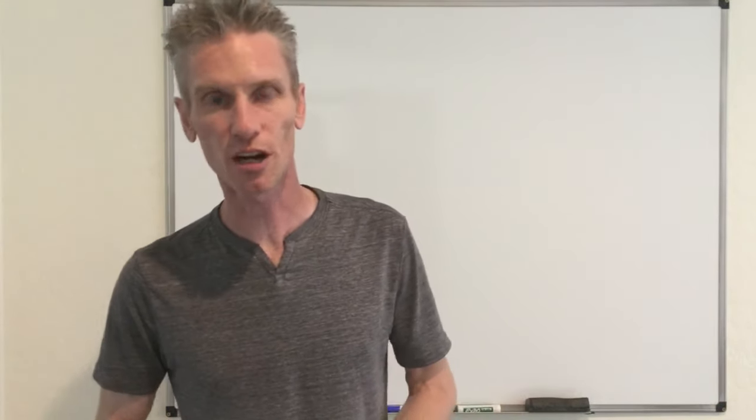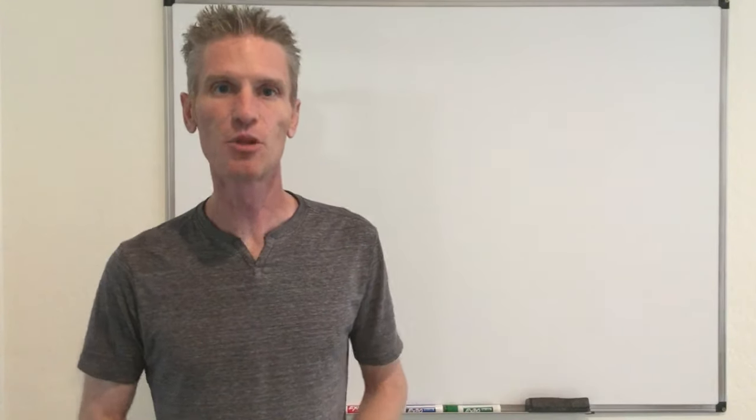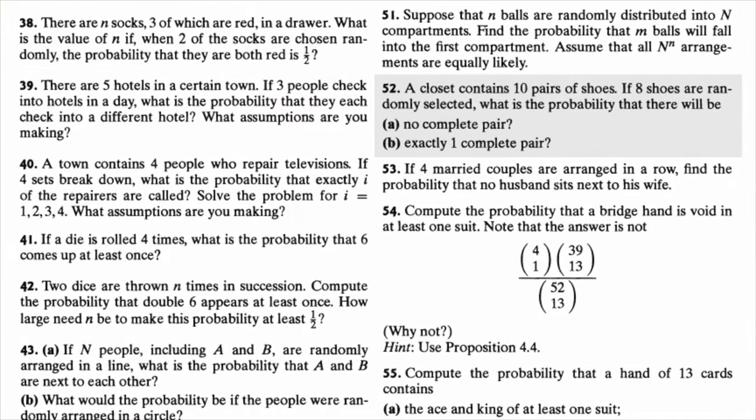Hi everyone, welcome back to my YouTube videos. In this video, I'm going to solve Problem 2.52 of the textbook 'First Course in Probability'. The problem says the following: assume that you have a closet with exactly 10 pairs of shoes, and you take exactly 8 shoes — not 8 pairs, but 8 shoes. The goal is to find (a) the probability that we have no complete pair, and (b) the probability of having exactly one complete pair.